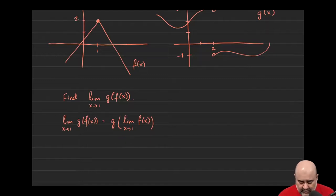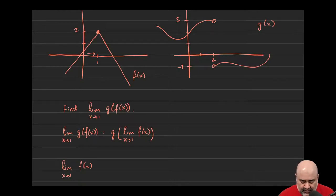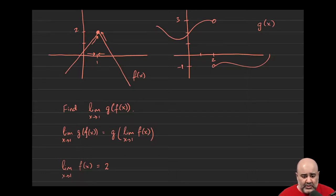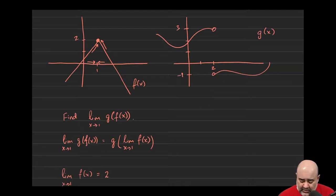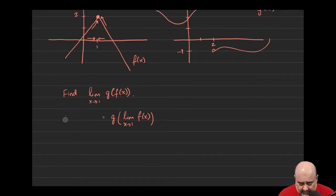As x approaches 1 from the left, f(x) gets closer and closer to 2, and from the right as well. So the limit exists and it is 2. Now we need to look at g of 2 to see if g is continuous at 2. Looking at the graph, g of 2 is not even defined — so the very first condition for continuity fails. G is not continuous at 2, so the limit property does not apply. We have to abandon ship and go back to the default: find the limit from the left and from the right.